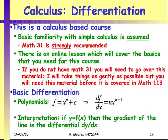We're going to need calculus in this course — it's a calculus-based course. Basic familiarity with simple calculus is assumed. There's an online lesson you can go through if you haven't done Math 31 or are concerned about your calculus skills. For differentiation, the key rule is: if f(x) = xⁿ + c, then df/dx = n·xⁿ⁻¹. If you don't know differentiation yet, just use this formula as a black box until you've covered it in your maths course.